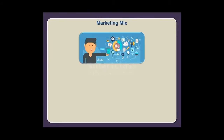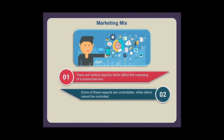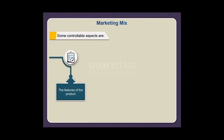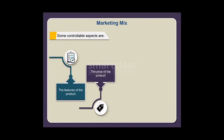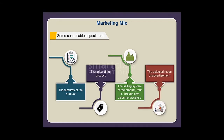Let us now learn about marketing mix. There are various aspects which affect the marketing of a product or service. Some of these aspects are controllable while others cannot be controlled. The uncontrollable ones must not be given much attention, as least could be done about them. Some controllable aspects are the features of the product, the price of the product, the selling system of the product — that is through own salesmen or retailers — and the selected mode of advertisement.